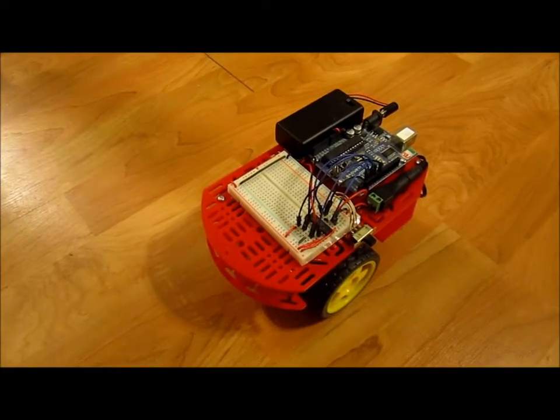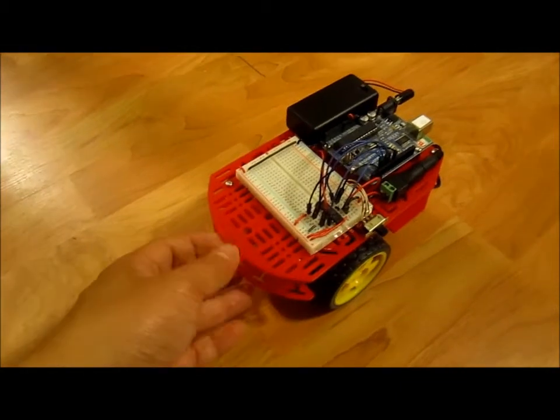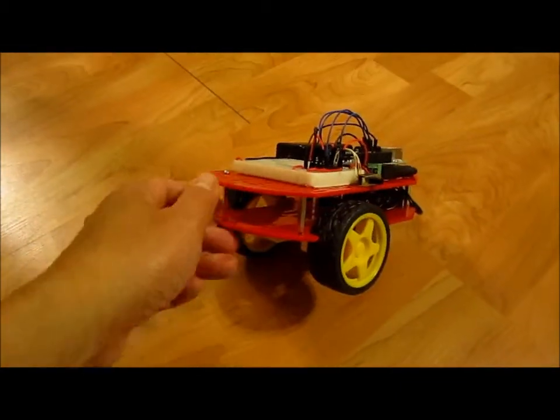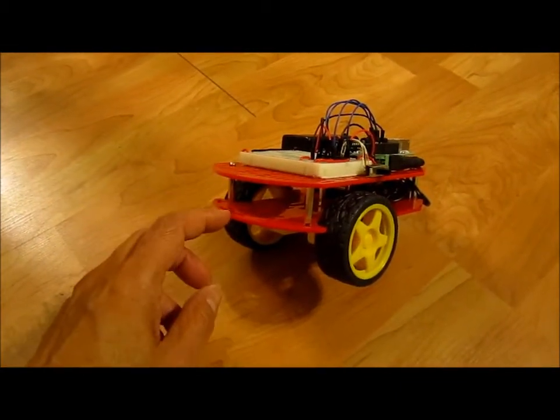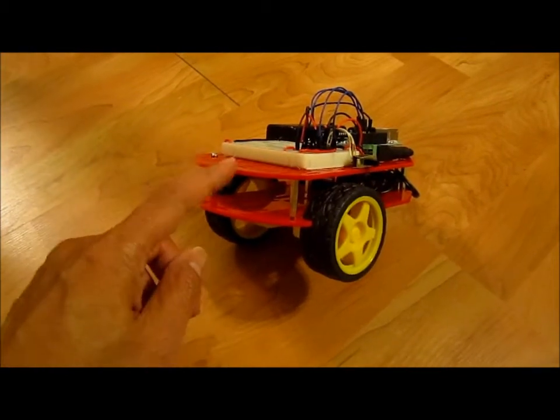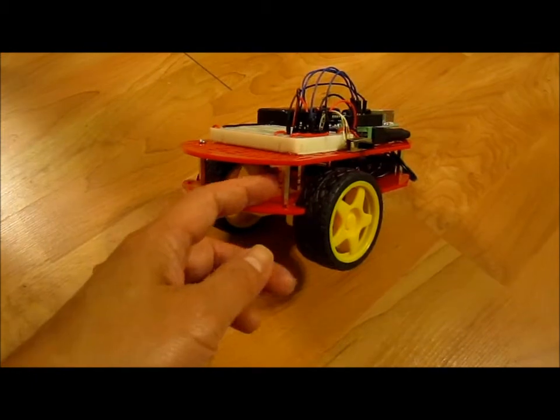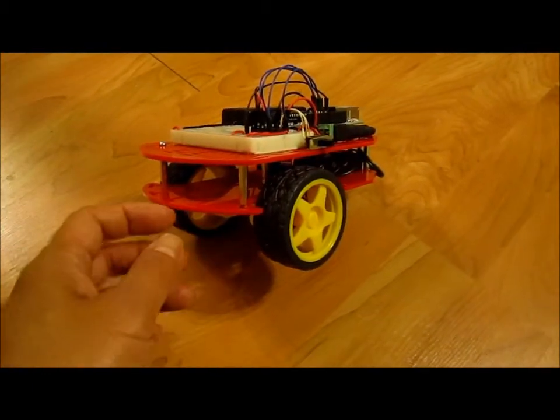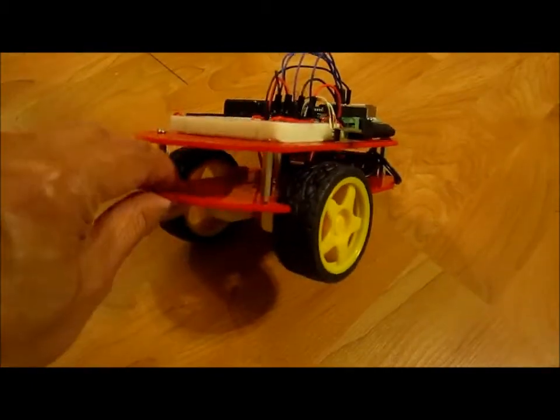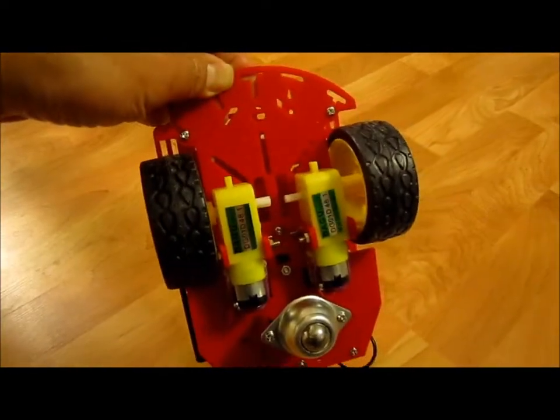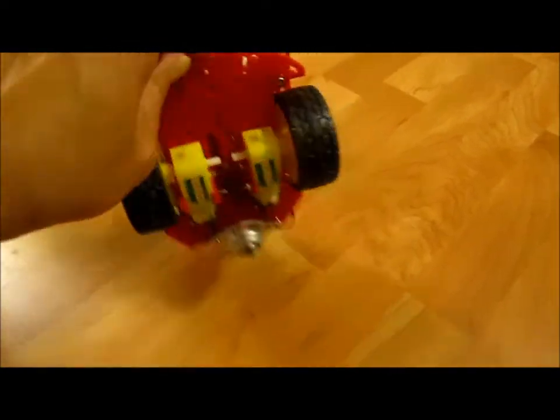Hey guys, just a short video to share my newest toy. This is called a Magician chassis from SparkFun. It's basically these two pieces of plastic, all the hardware, the standoffs, the screws come with it. It comes with the wheels, it comes with the motors down there, two motors, and a caster.